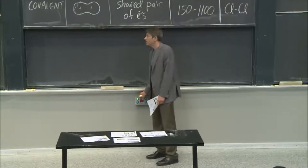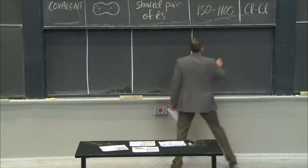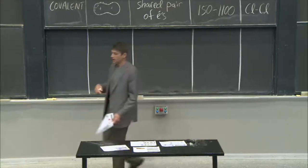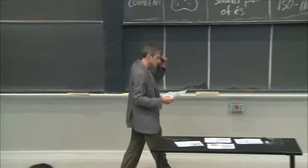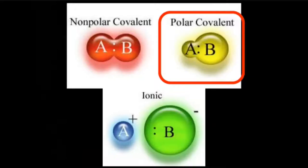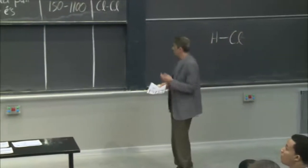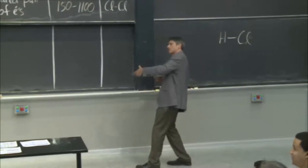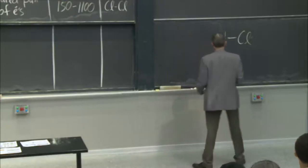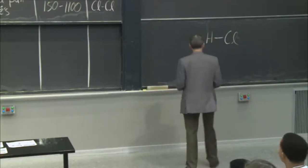Now let's talk about how molecules interact with each other. Let's start with the polar covalent bond, which we've already discussed. In HCl, there's sharing, but it's unfair — one atom takes more of the charge, so the electron cloud is denser on one side. It's still a covalent bond, but you end up with a partial positive charge on hydrogen and partial negative on chlorine.